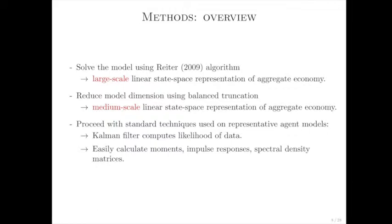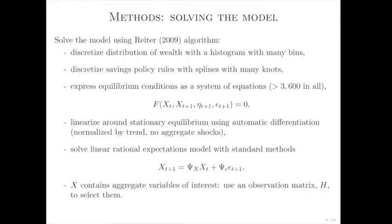I'll give an overview of the methods. I'm not really inventing new methods — it's applying existing methods. The first step is to solve the model using the approach to incomplete market models developed by Michael Reiter. The result is a large linear state-space representation of the aggregate economy. The second step is to reduce that to a small or medium-scale representation using techniques for model reduction of linear models. At that stage, we have the model in the mathematical form already used to analyze representative agent models. Then we can compute the likelihood with the Kalman filter and do anything that builds off that linear state-space form.